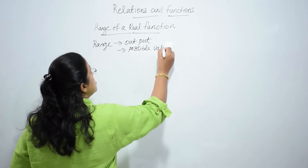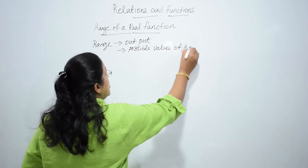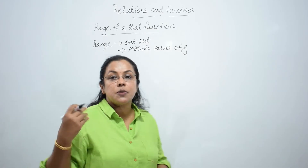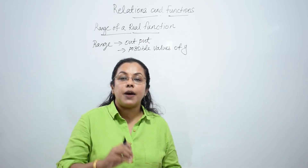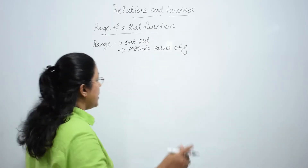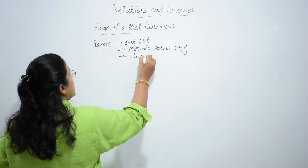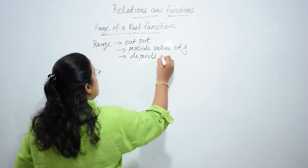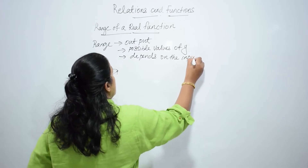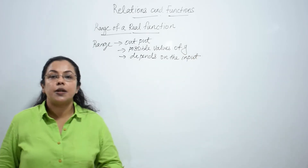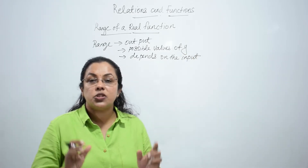Possible values of y. Domain is the possible values of x, and range is the possible values of y. It depends on the input or domain. This is the meaning of range.